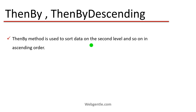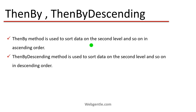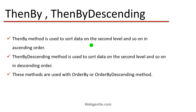The ThenBy method is used to sort data on the second level and beyond in ascending order. Suppose you have applied sorting using OrderBy or OrderByDescending, and then on the second or third level you need to sort based on another property — you use ThenBy. ThenByDescending works the same way but sorts in descending order. These methods cannot be used independently; they must follow OrderBy or OrderByDescending.